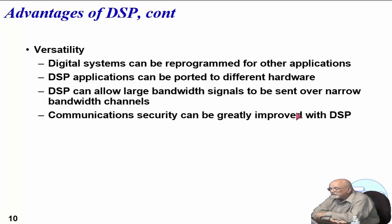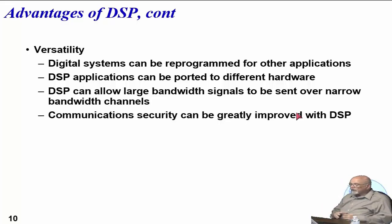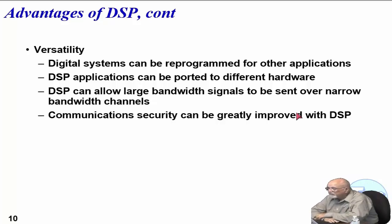DSP can allow large bandwidth signals to be sent over narrow bandwidth channels. This is what we were talking about specifically with Shannon's theorem — the whole reason he looked into this was to be able to encode many messages on one set of wires. Security can also be greatly improved because if you have an analog signal, almost anybody can interpret it. But if you take these numbers and digitally encode them, no one else can interpret them unless they have the decoding.